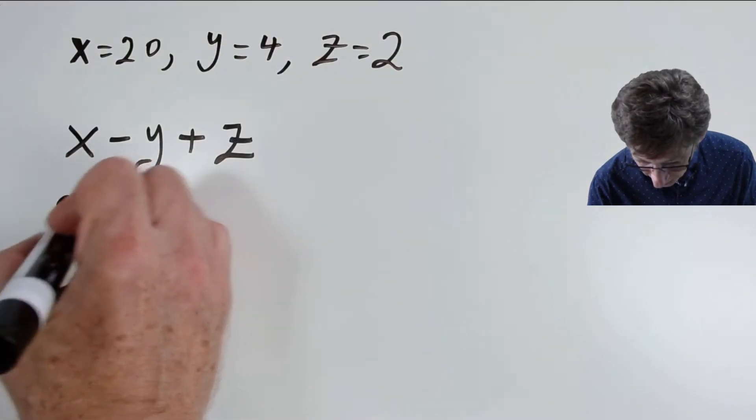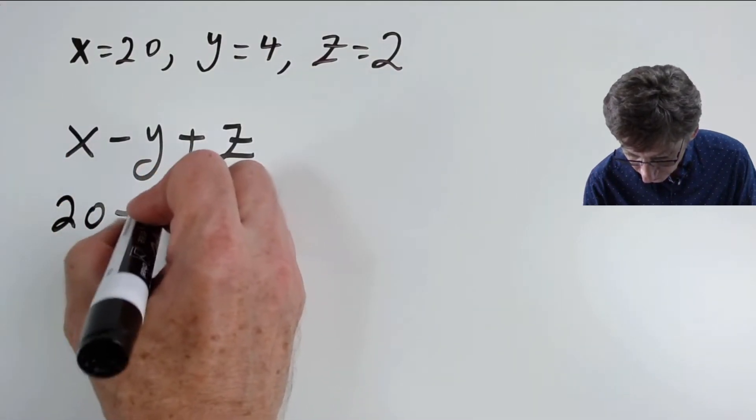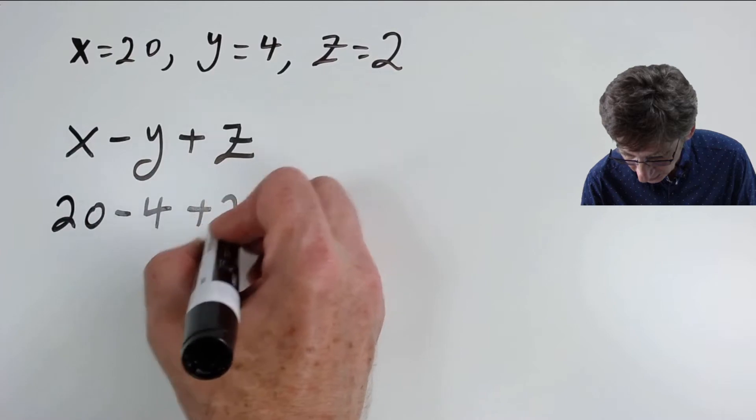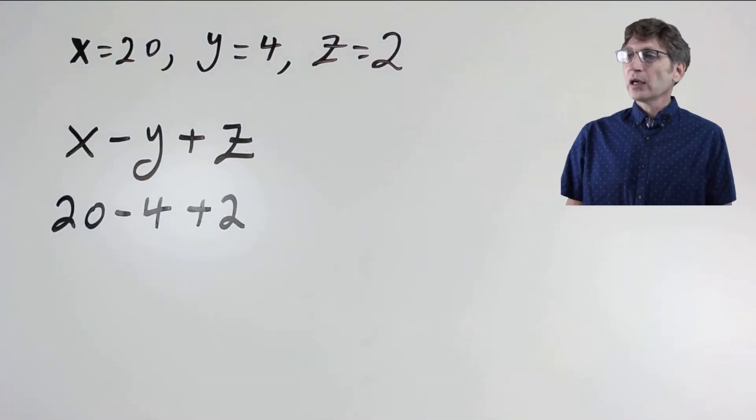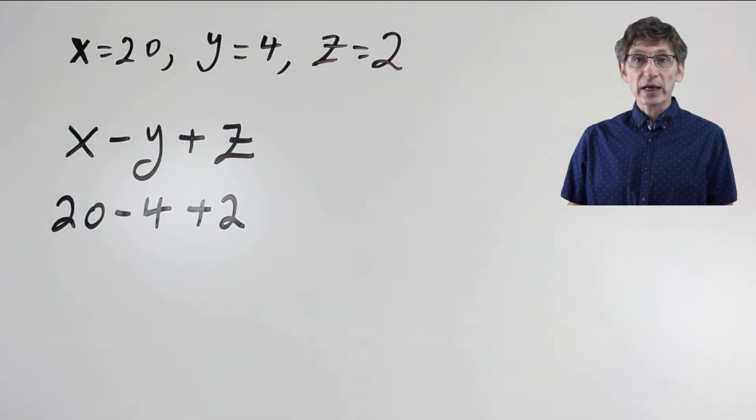x is 20, y is 4, z is 2. Now that I have a numerical expression, I simply follow the order of operations to evaluate this.